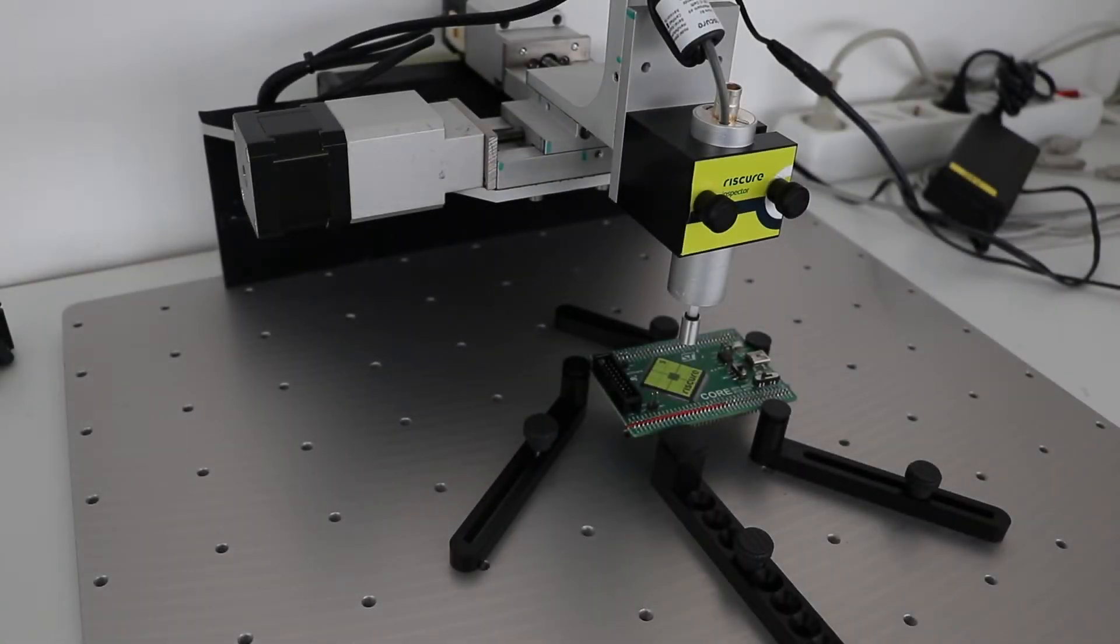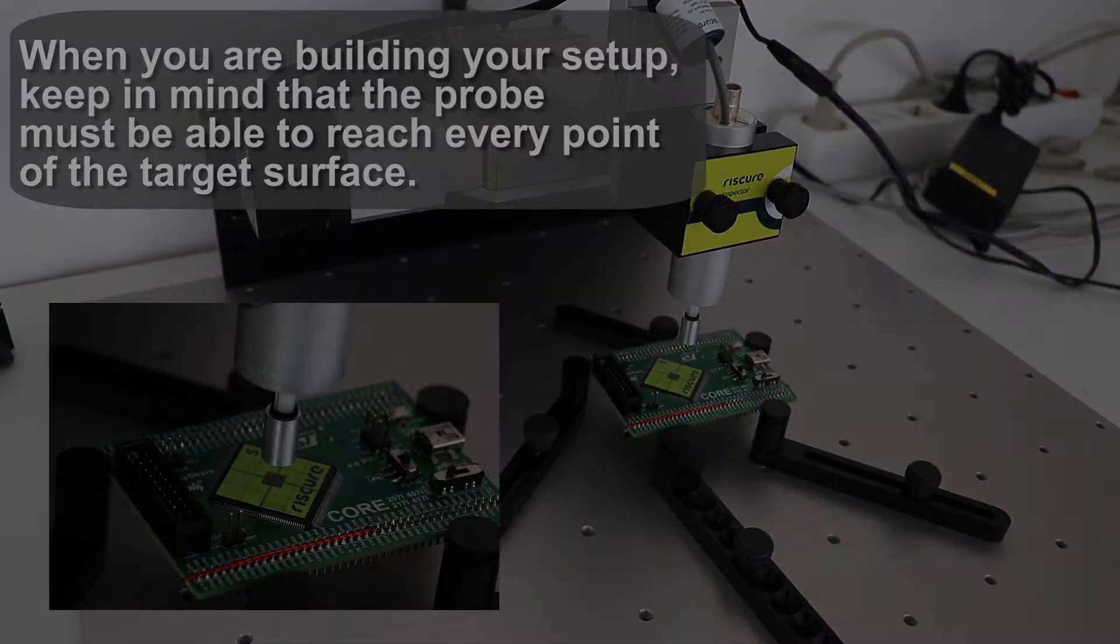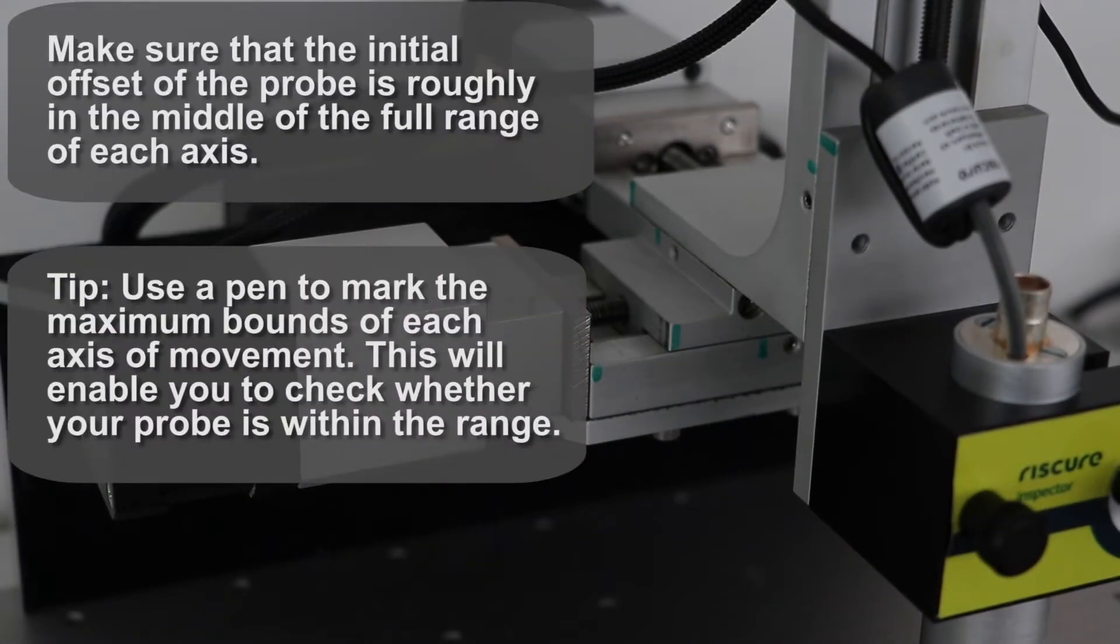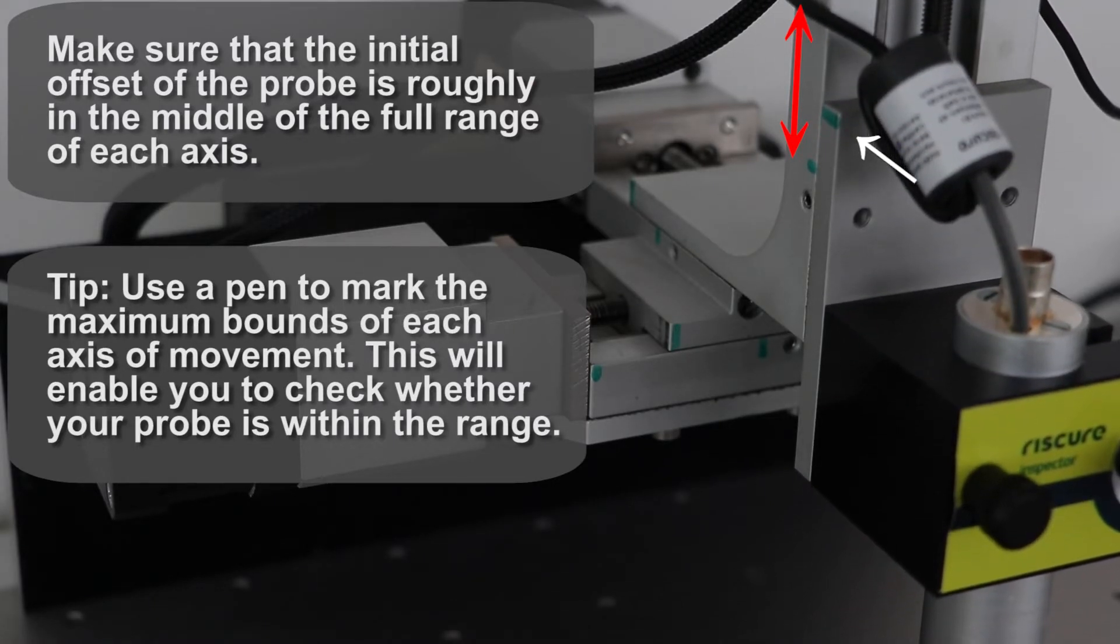Now, you can use Inspector to move the probe, but remember, the probe tip must be able to reach every point of your target surface. If you place the target at a point away from the range of the probe clamp, it will ruin your setup.